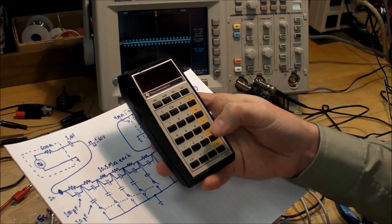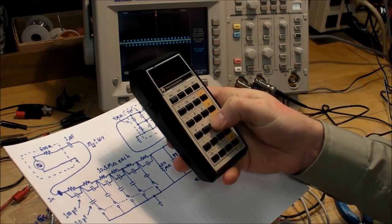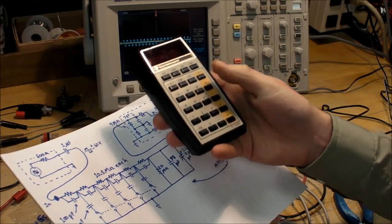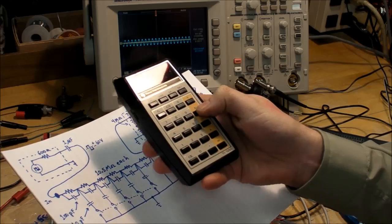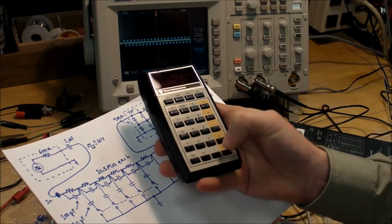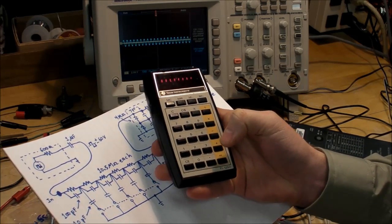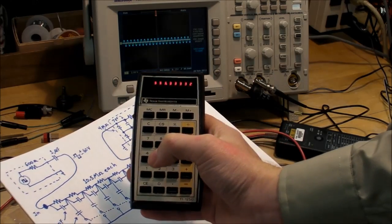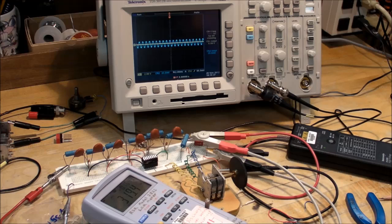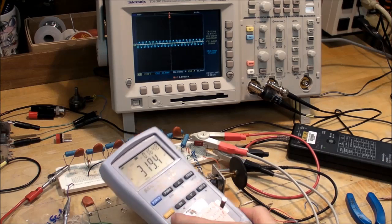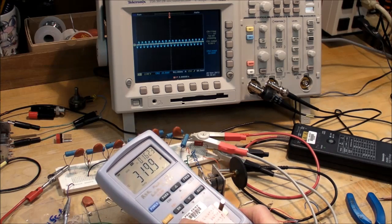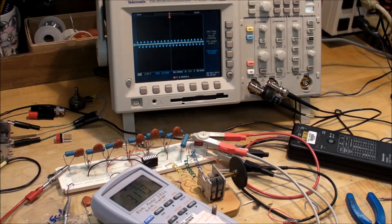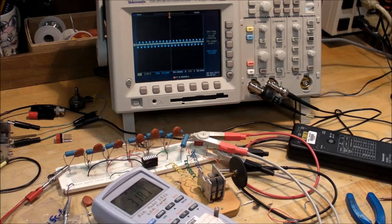Then multiply that by 20 and we get 333 picofarads. And 333 is good compared to what I'm measuring, that's about a one percent error. So I would say that this high voltage probe is definitely compensated as it is now.